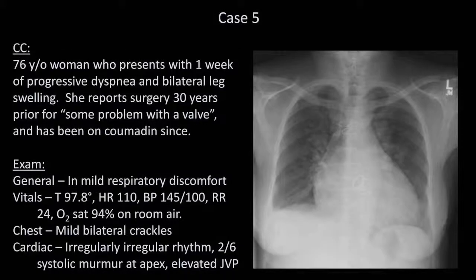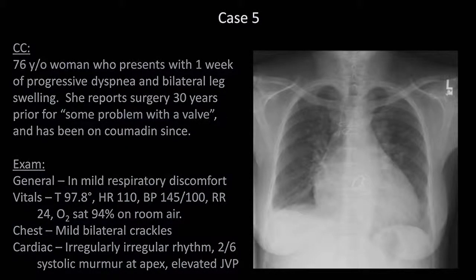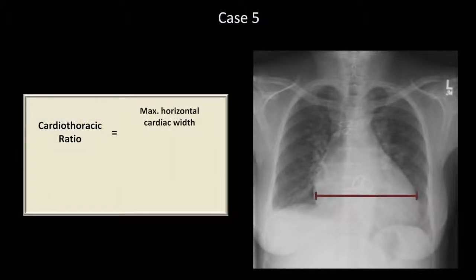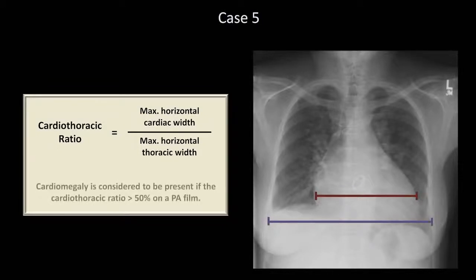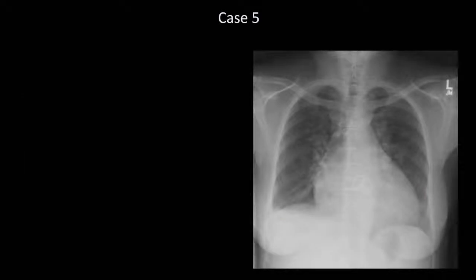Case 5. A 76-year-old woman presents with one week of progressive dyspnea and bilateral leg swelling. She reports her medical history is most notable for some type of heart valve surgery 30 years ago. The first thing you probably noticed is her cardiac silhouette looks large. The cardiothoracic ratio is equal to the maximum horizontal cardiac width divided by the maximum horizontal thoracic width as measured between the inner rib margins. Cardiomegaly is considered to be present if this ratio is greater than 50% on the PA film, which it clearly is in this case.